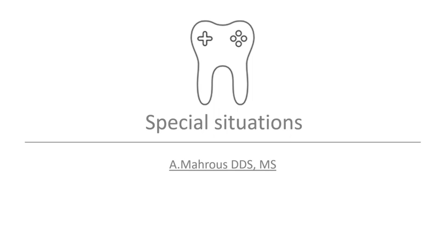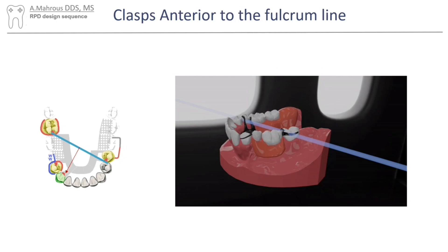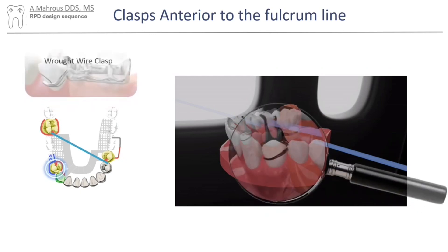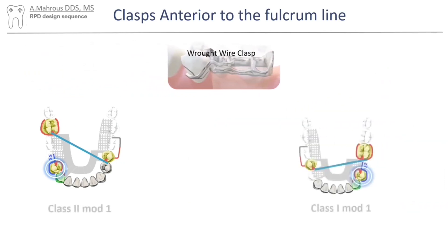Now that we have a basic understanding of RPD design, it's important to point out a few special situations. Firstly, cases with clasps anterior to the fulcrum line — like this case with the Kennedy Class II Mod 1 — the clasp assembly on tooth number 28 exists entirely anterior to the fulcrum line. Because of this, the whole clasp assembly tends to lift off the tooth when pressure is applied on the edentulous segment. Therefore, the best clasps to be placed in this area to ensure proper stress breaking are wrought wire clasps, due to their flexibility compared to other cast clasps. Similar situations will also occur anytime a modification space exists anterior to the fulcrum line, as is the case with many Class I and Class II cases.